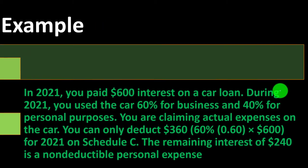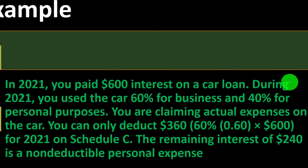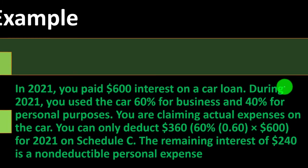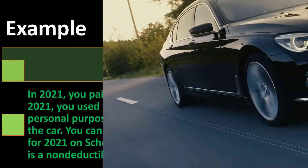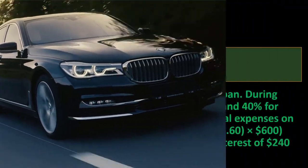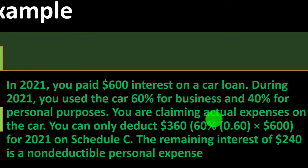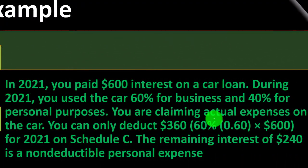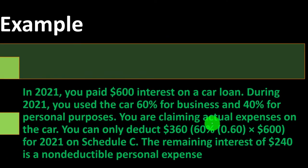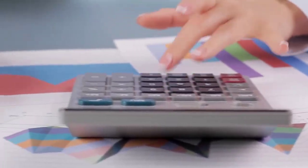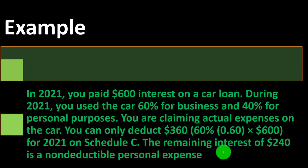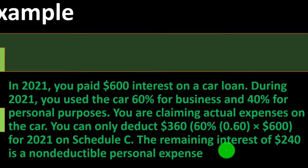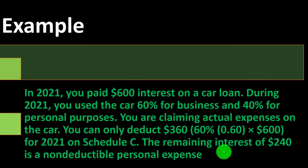For example, in 2021 you paid $600 interest on a car loan. During 2021 you used the car 60% for business and 40% for personal purposes, and you are claiming actual expenses on the car — not the mileage method. You can deduct 60% — $360 — on Schedule C for 2021. The remaining $240 in interest is a non-deductible personal expense.